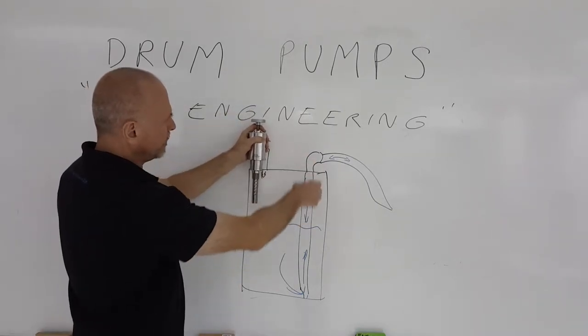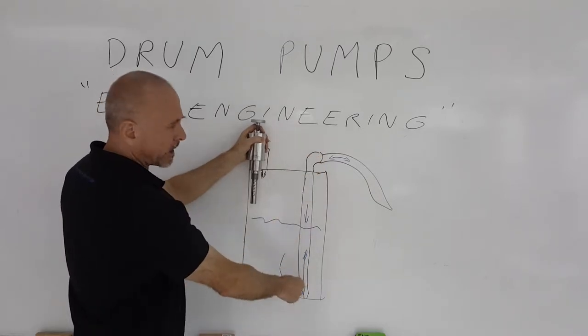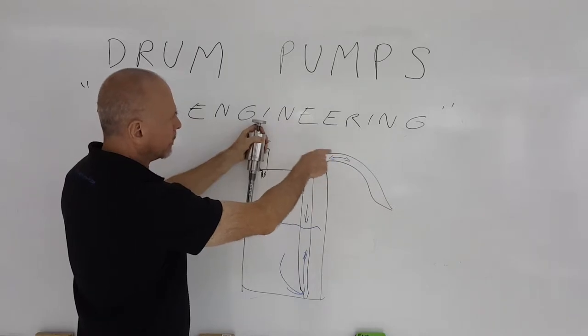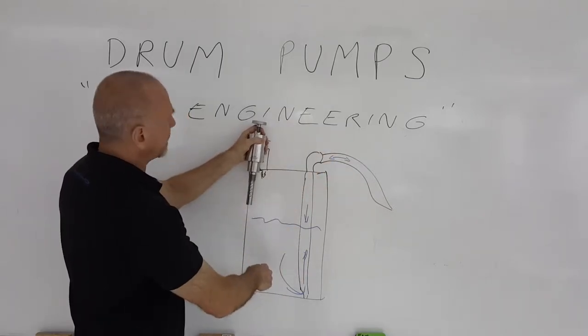On the large hole, you put a standpipe with a slot in it that allows liquid to go up through that standpipe, either out of or into the drum.